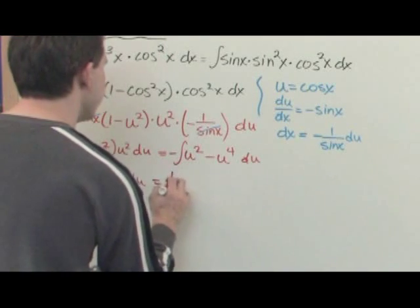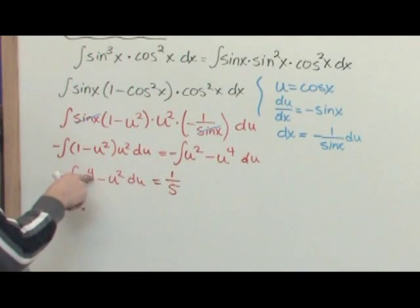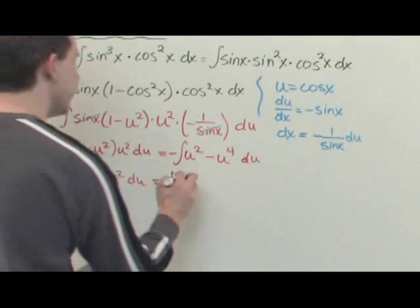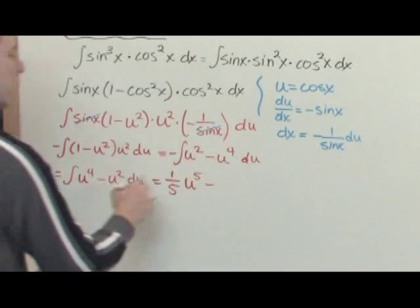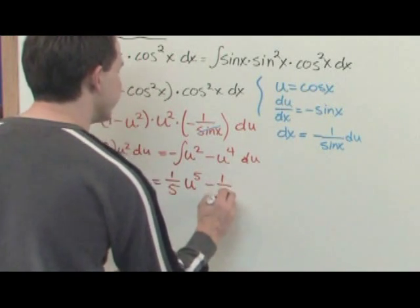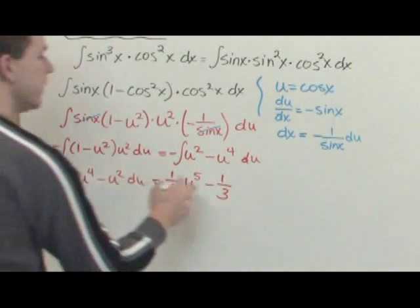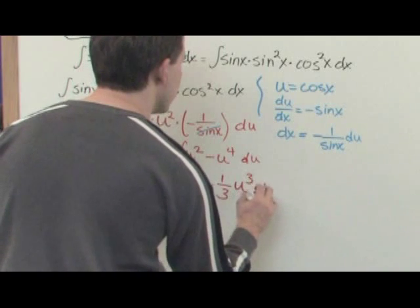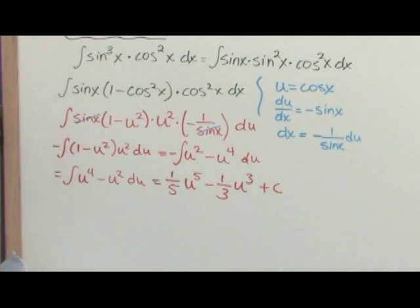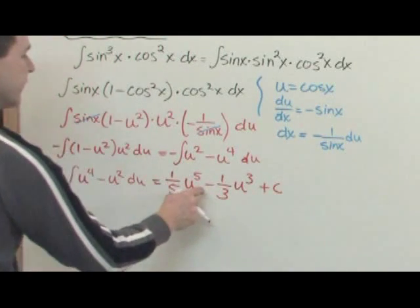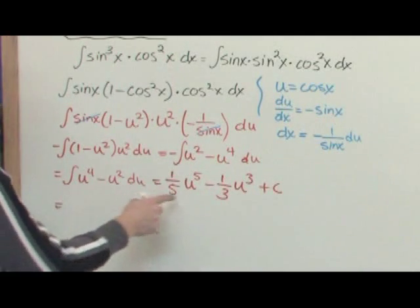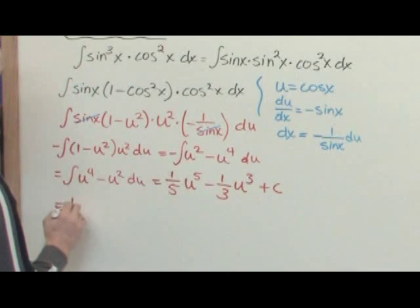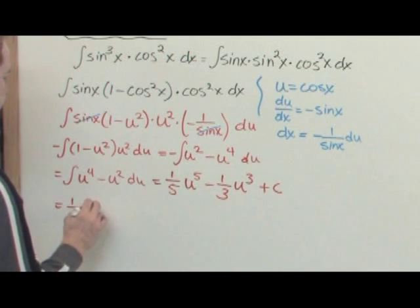One plus the exponent is four plus one is five, so one-fifth u to the fifth power minus, this one is going to be one over exponent plus one, two plus one is three, so one-third u to the third power plus a constant. So I have the answer, one-fifth u to the fifth power minus one-third u to the third power plus a constant. And now I just plug in my definition of u, which is going to be one-fifth times cosine to the fifth power of x minus one-third times cosine cubed x plus a constant.